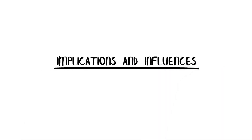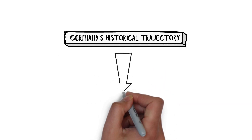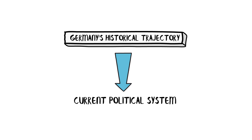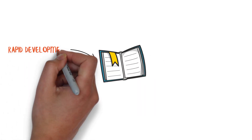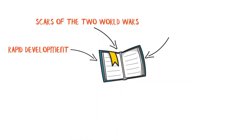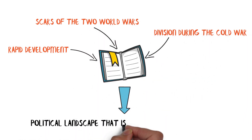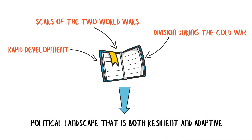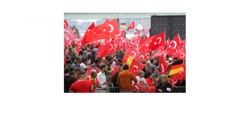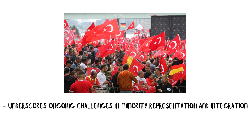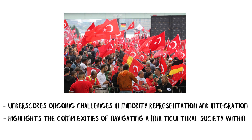Implications and influences: the impact of Germany's historical trajectory on its current political system is profound. The lessons learned from rapid development, the scars of two world wars, and the Cold War division have all shaped a resilient and adaptive political landscape. Furthermore, the situation of the Turkish community underscores ongoing challenges in minority representation and integration, highlighting the complexities of navigating a multicultural society within a democratic framework.